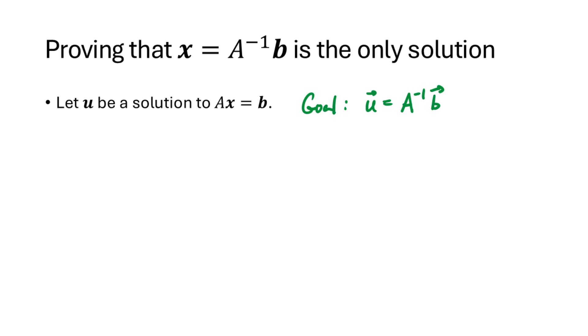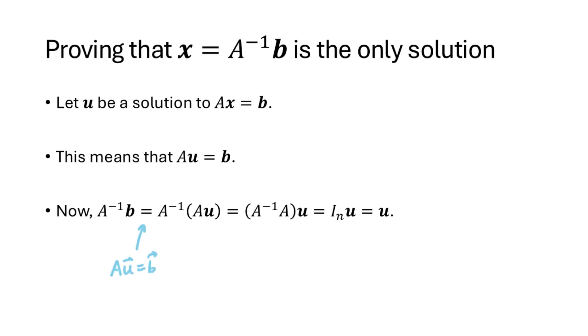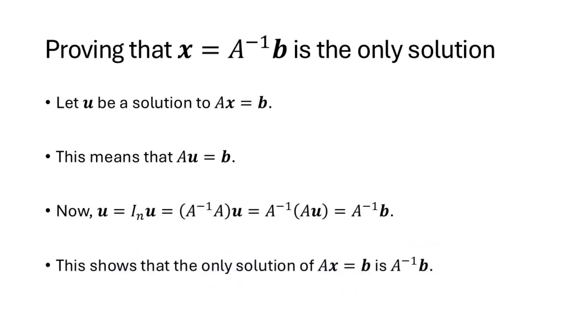What does it mean for U to be a solution of the equation AX equals B? It means that when we put U in for X, the left-hand side equals the right-hand side, that A times U equals B. Now we can write A inverse B as A inverse times AU, that's because B and AU are equal. And then we can shift those parentheses again, that's the definition of matrix multiplication. And then A inverse times A is IN, and IN times U is U. So that's why A inverse B has to equal U, and that means that we've achieved our goal of showing that U equals A inverse B.